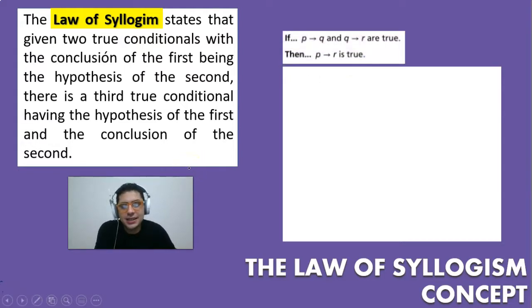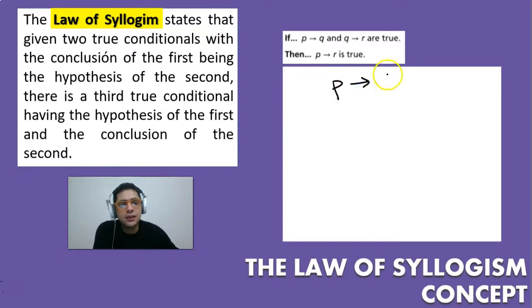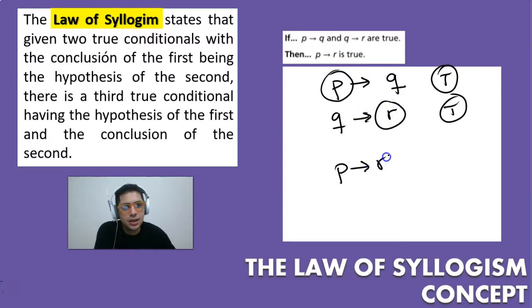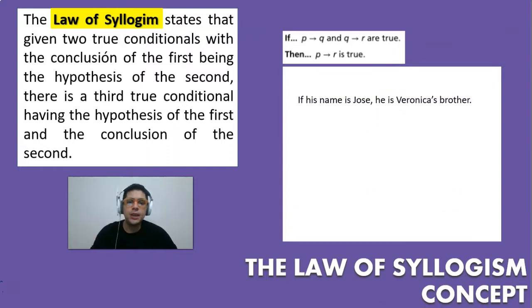Basically, it says that if p then q, and q then r, are both true — which we are going to assume — then there is a third statement which says that p then r is also true. The law of syllogism says that if p then q and q then r are both true, then we can jump from p to r straight away.